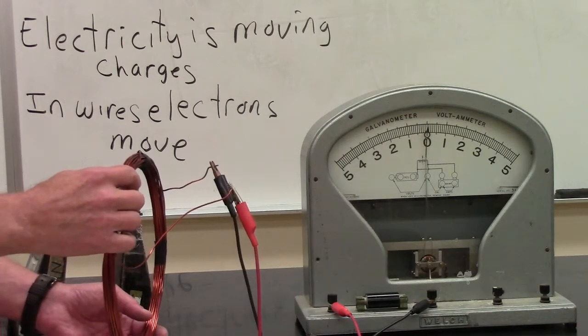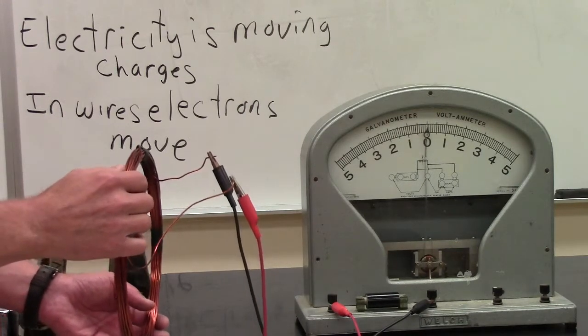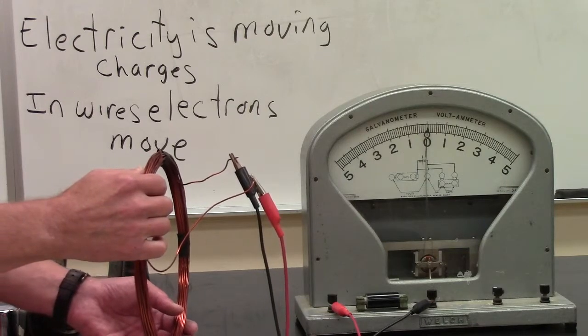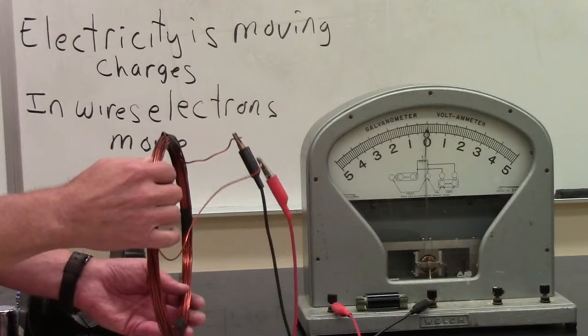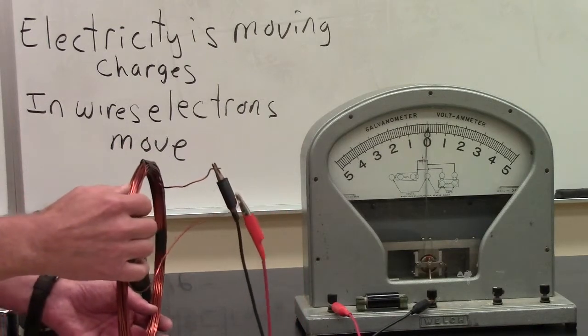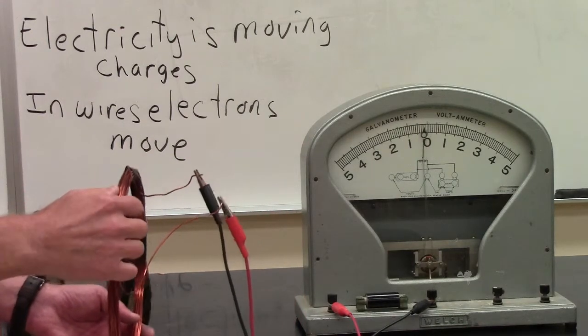In natural gas, coal, and nuclear plants, what they're doing is producing high-pressure steam, and that high-pressure steam ends up moving the copper coil through a magnetic field.